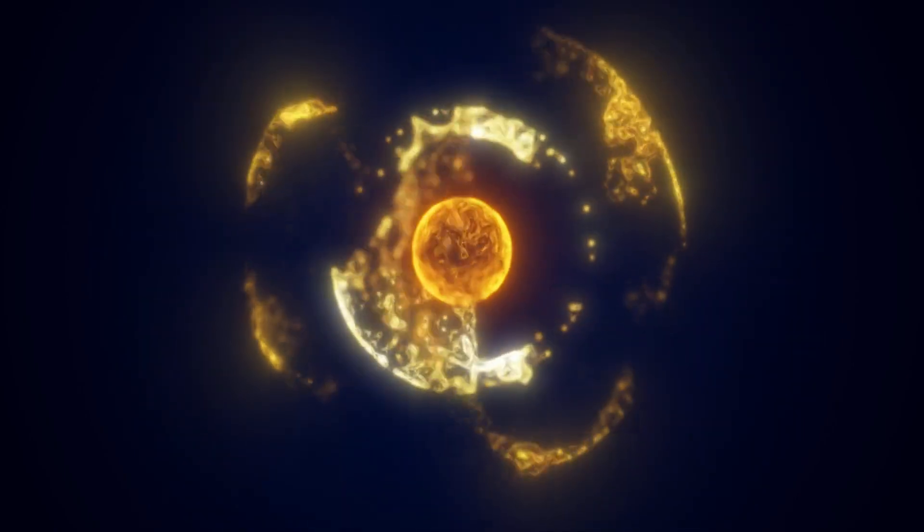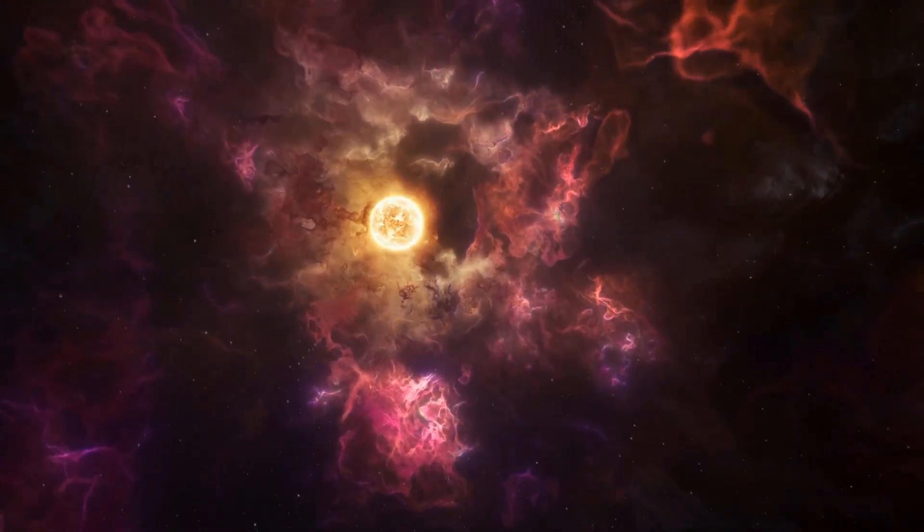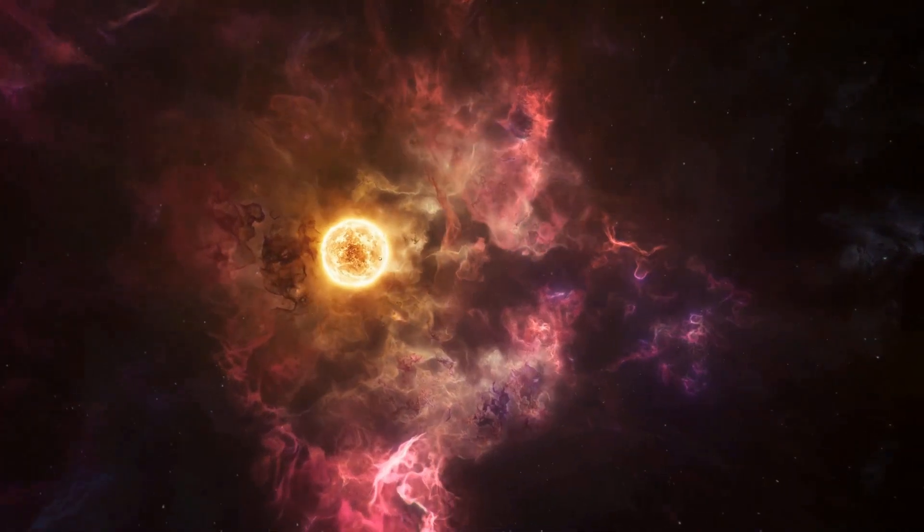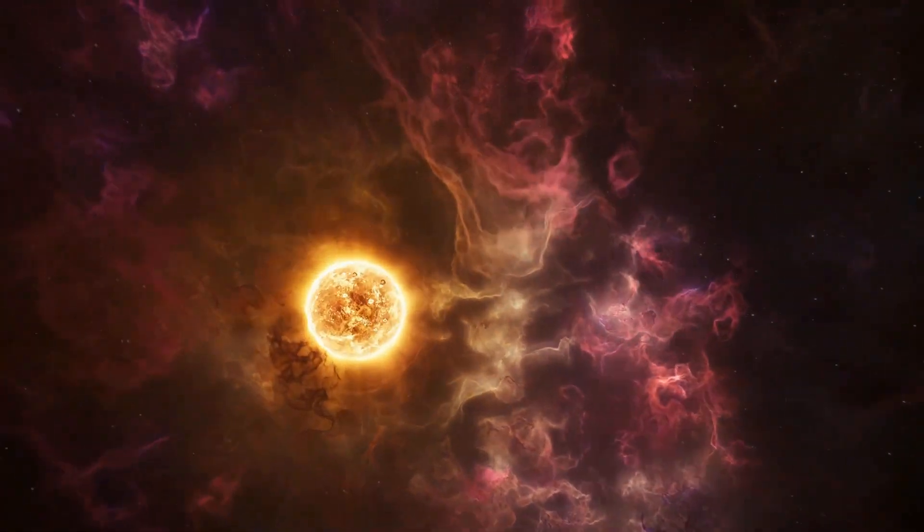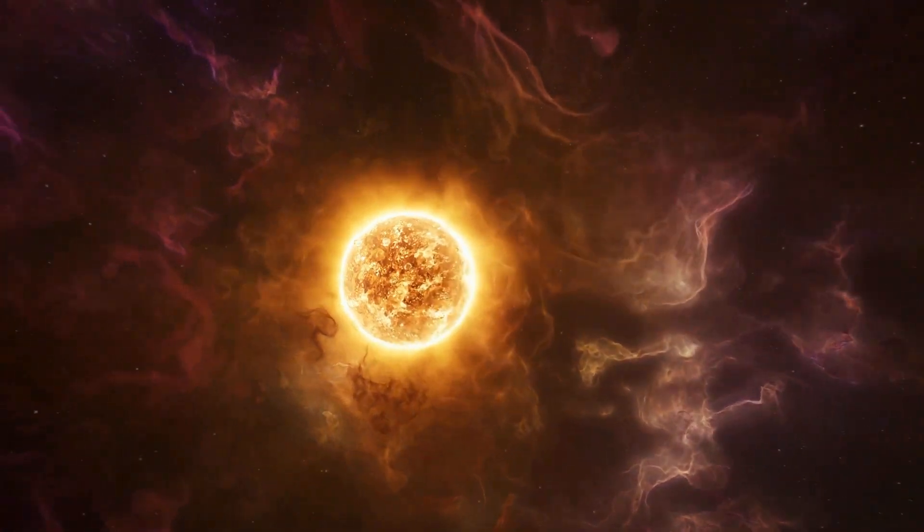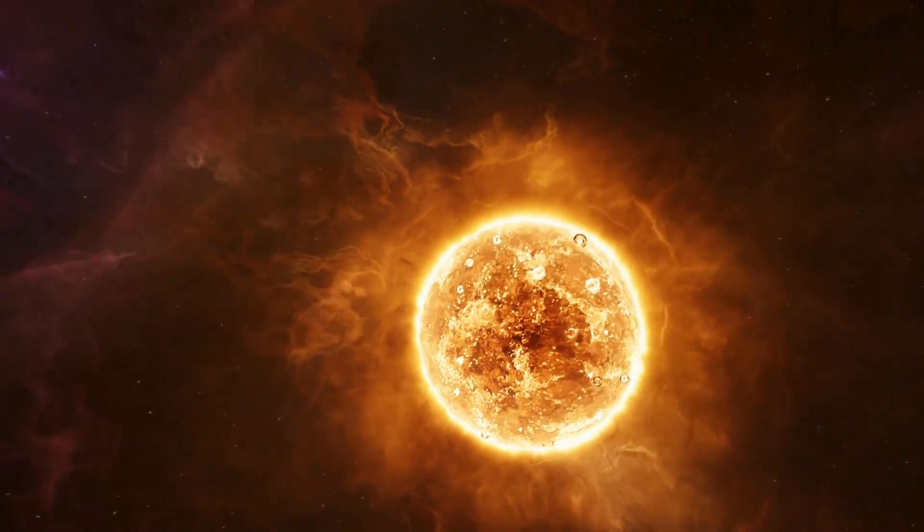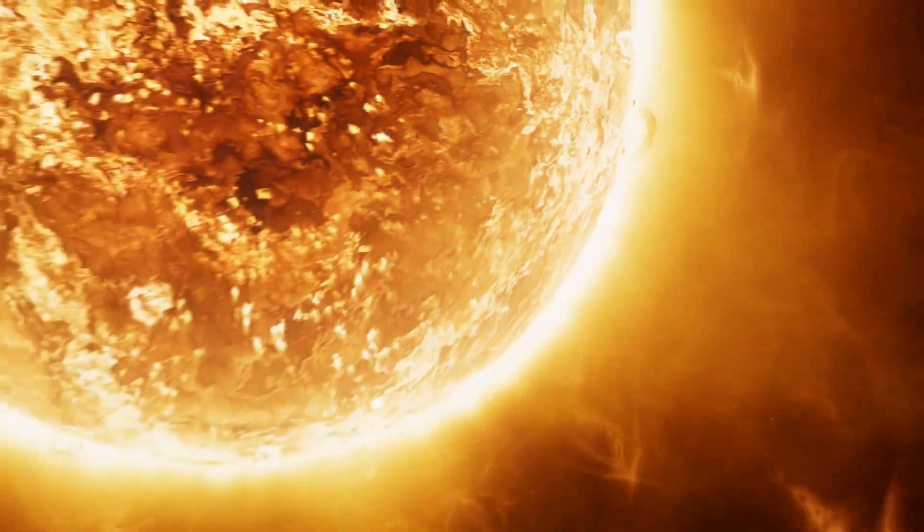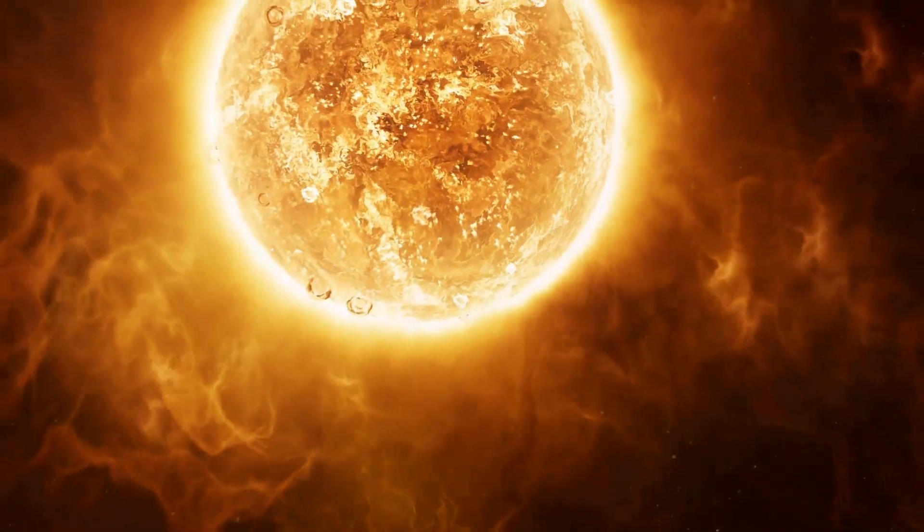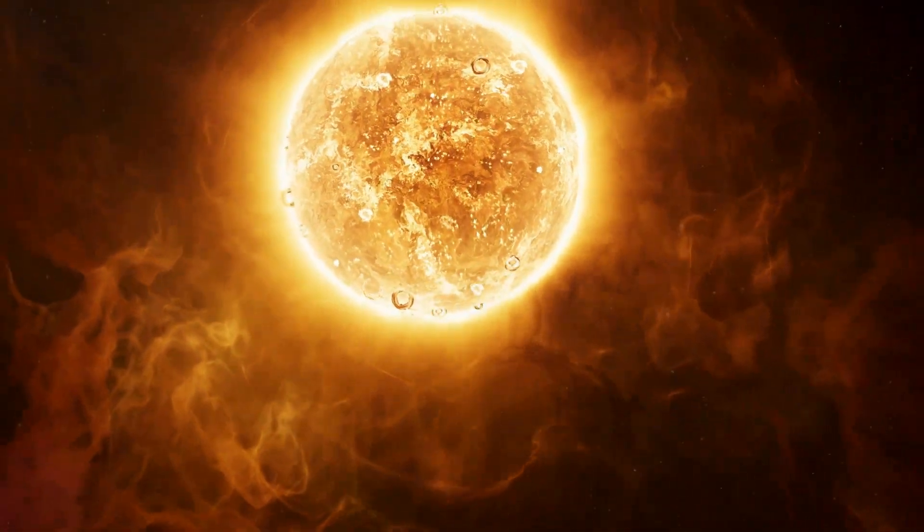Sunspots, temporary dark regions on the Sun's surface, are caused by magnetic activity. These areas can be significantly larger than Earth, and are often associated with solar flares, intense bursts of radiation, and coronal mass ejections, massive expulsions of solar plasma and magnetic fields into space.